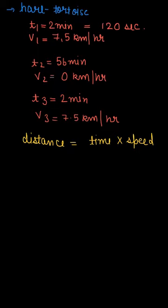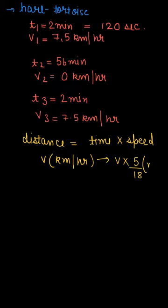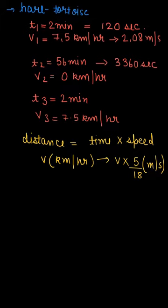To change the velocity from km per hour to meter per second, just multiply by 5/18. So 7.5 km per hour equals 2.08 meter per second. Also, 56 minutes can be written as 3,360 seconds, and 2 minutes equals 120 seconds. The speed for T3 is also 2.08 meter per second, as calculated above.